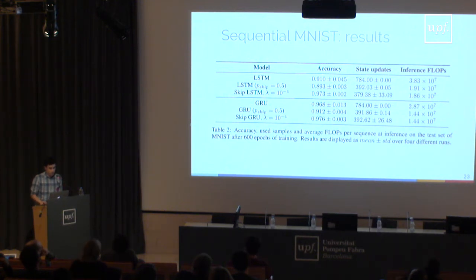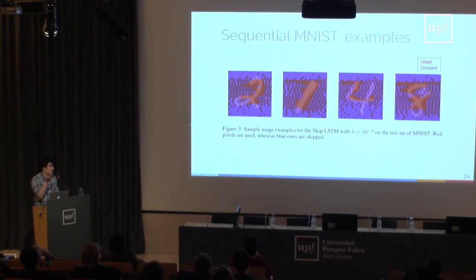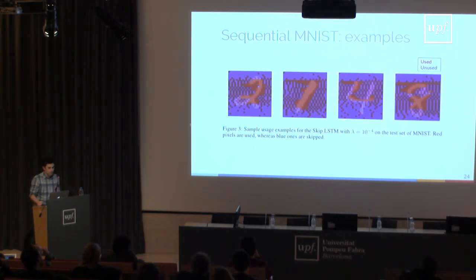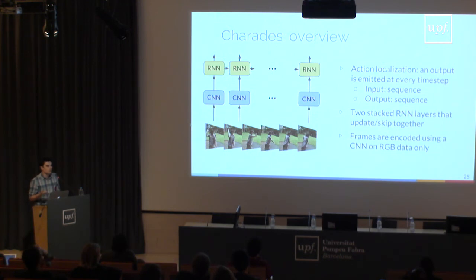One nice thing about MNIST is we can visualize what's happening. I'm showing in red the pixels being used and in blue the ones being skipped. You can see this roughly makes sense — it focuses on different parts of the digits. This is different for every input, so it's not constant, and we observe that it changes during training, which is what we wanted: letting the network tune these masks it's learning.